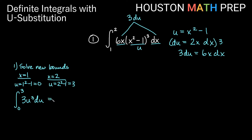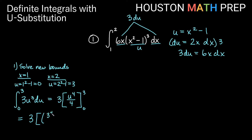Moving forward and solving this, we keep the constant multiple of 3 and apply the power rule: the power goes up by 1, giving u⁴/4. We evaluate from 0 to 3: plugging in 3 gives 3⁴/4, and plugging in 0 gives 0⁴/4, which is 0. So we get 3 × (81/4) = 243/4. That is the answer using method one.